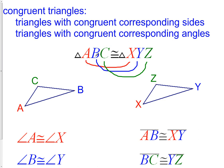A is congruent to X, B is congruent to Y, and C is congruent to Z. So we have three angles A, B, and C congruent to three angles X, Y, and Z.